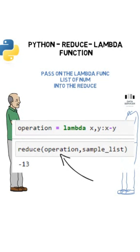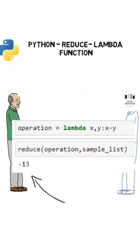Then pass the lambda function and the list of numbers into the reduce. This gives us the final output, that is the cumulative value, to be precise, a single value.